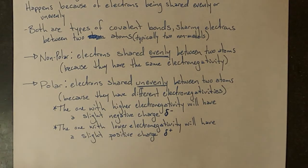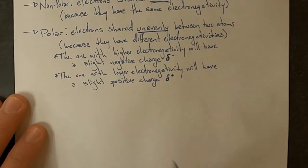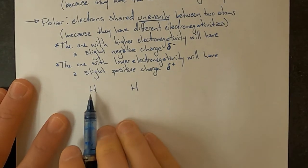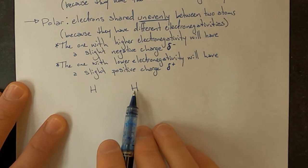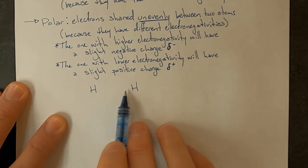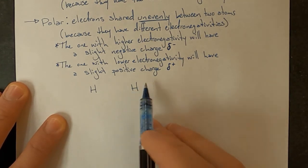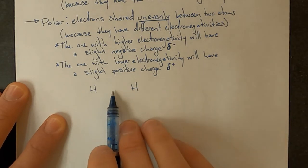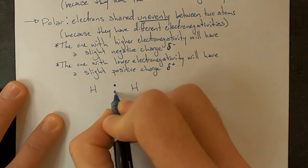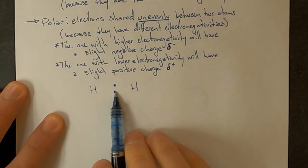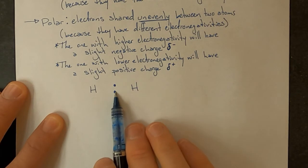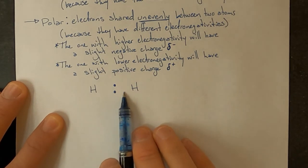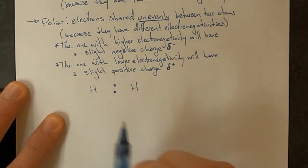Let's look at some examples. Two hydrogen atoms each have an electronegativity of 2.2, so neither one pulls electrons more than the other. The electrons exist evenly between them — they're orbiting both atoms evenly. Because the electrons are shared evenly, this is a nonpolar bond. There is no difference in electronegativity between these two atoms.